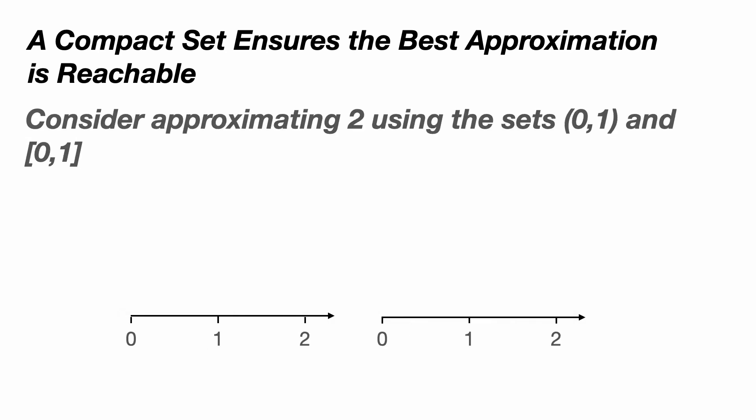Consider approximating the number 2 and you're given two sets. The open interval from 0 to 1, which doesn't include the endpoints 0 and 1 and isn't compact, and the closed interval from 0 to 1, which does contain the endpoints and is compact. In the open case, we can create a sequence of numbers which get closer and closer to 1, which of course would be the best approximation to the number 2. But we never actually reach the best approximation because it isn't in the open interval.